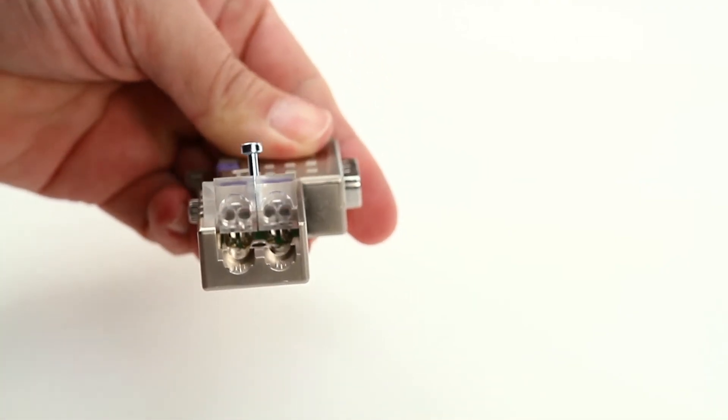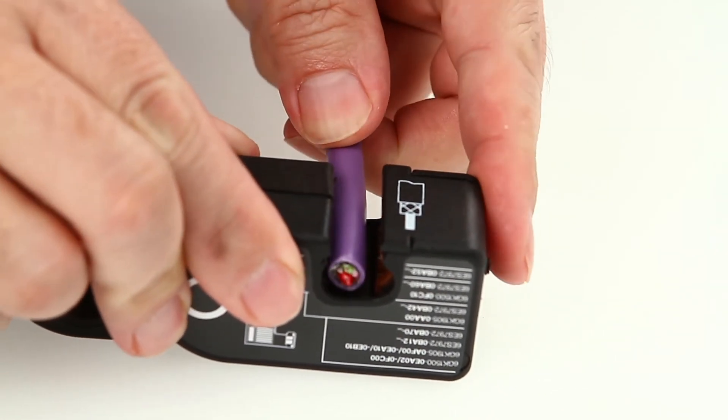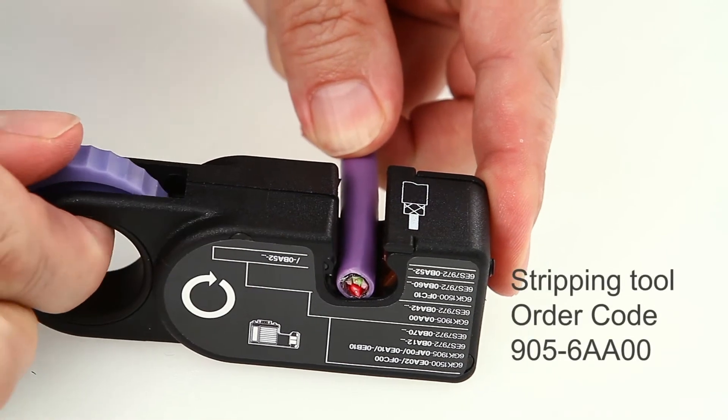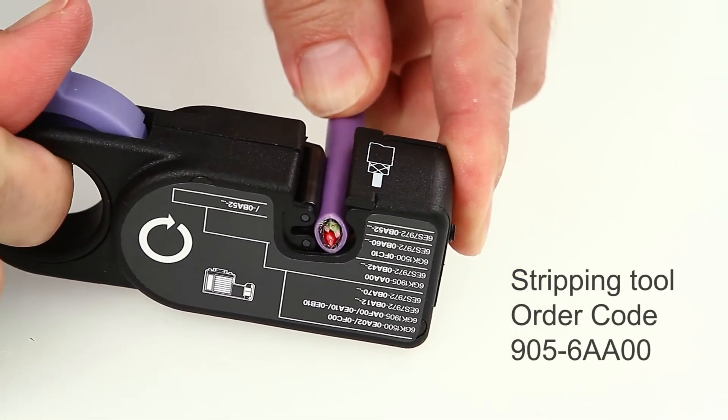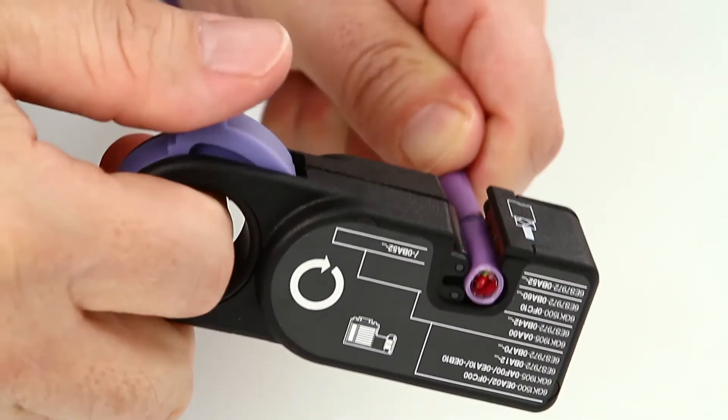Insert a flexible or rigid Profibus cable into the stripping tool and tighten it. Turn the stripping tool several times until notches are produced - a deeper one on the front and a lighter one on the rear of the cable.